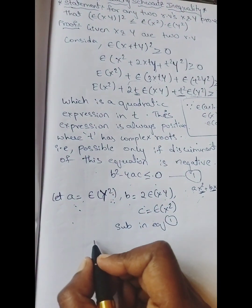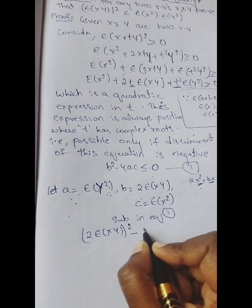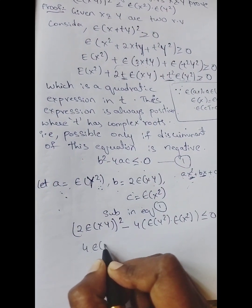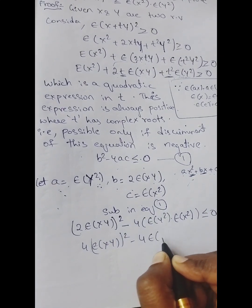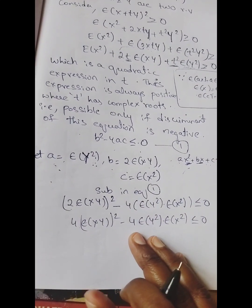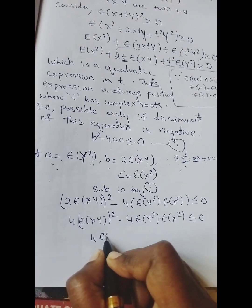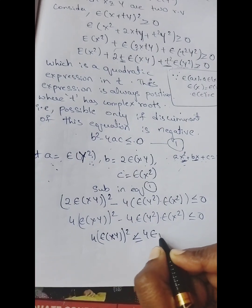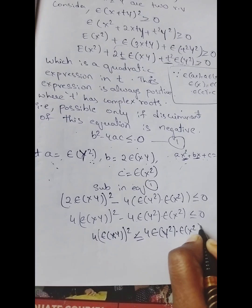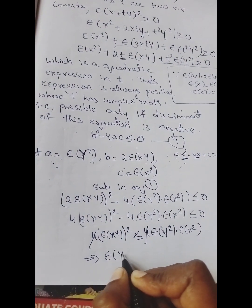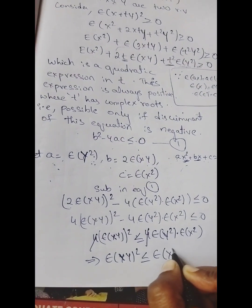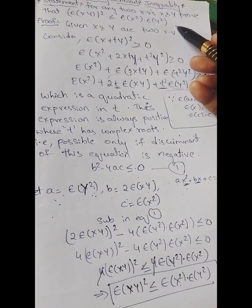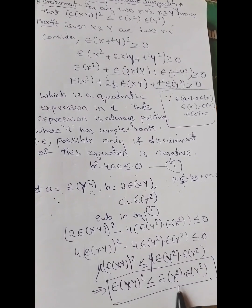Substituting: (2·E(xy))² − 4·E(y²)·E(x²) ≤ 0, which gives 4·E(xy)² − 4·E(y²)·E(x²) ≤ 0. Moving the negative term to the right-hand side: 4·E(xy)² ≤ 4·E(y²)·E(x²). The 4s cancel, leaving E(xy)² ≤ E(x²)·E(y²). This is the Cauchy-Schwarz Inequality, hence the theorem is proved.